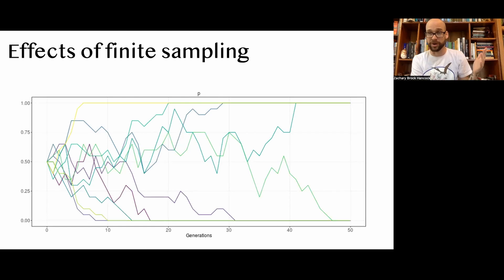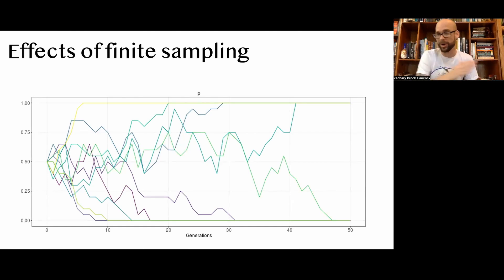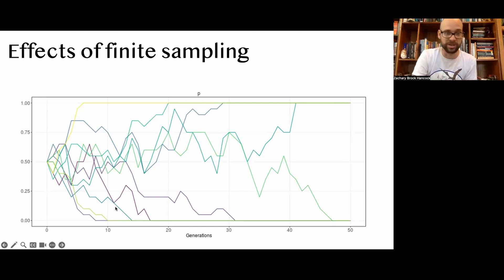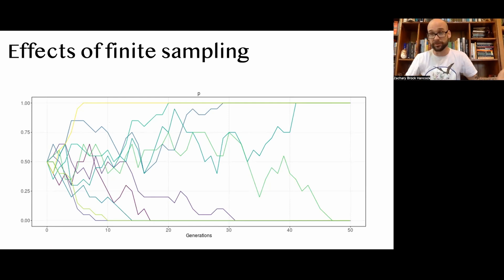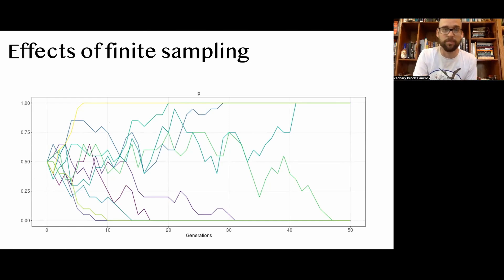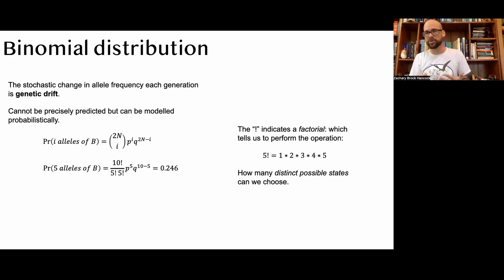Here's a plot of 10 different replicates, all starting at allele frequencies of 50% and going out to 50 generations, after which all have been fixed. You can see it's super noisy — alleles are just bouncing around. Some fix rapidly, some are lost rapidly, some bounce around for a long time before going to fixation or loss. The stochastic change in allele frequency every single generation is genetic drift — that's what we mean by it.